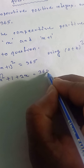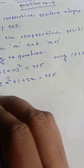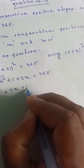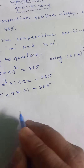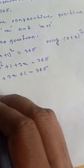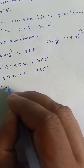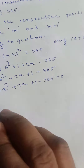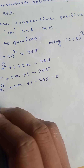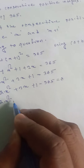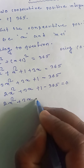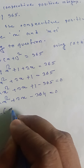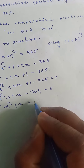Expanding: x square plus x square plus 2x plus 1 equals 365, where b is 1, so 2ab equals 2x. This gives 2x square plus 2x plus 1 equals 365, so 2x square plus 2x plus 1 minus 365 equals 0.